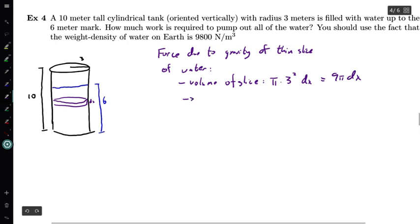So that tells me then that the force due to gravity is equal to 9,800 times that 9 pi dx. So that's the force due to gravity. The other thing that we need to do is think about how far are we moving it. We know that work is force times distance. So we also need to think about the distance slice needs to be transported.